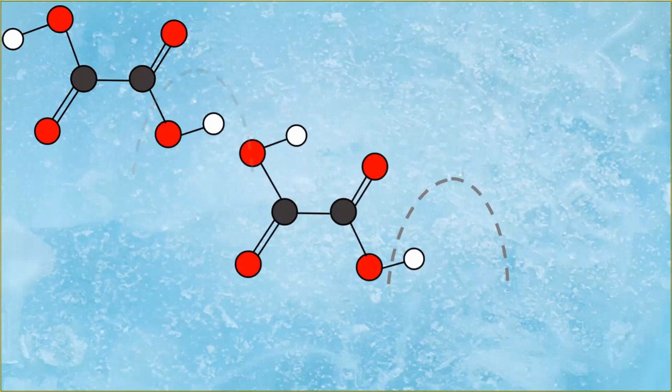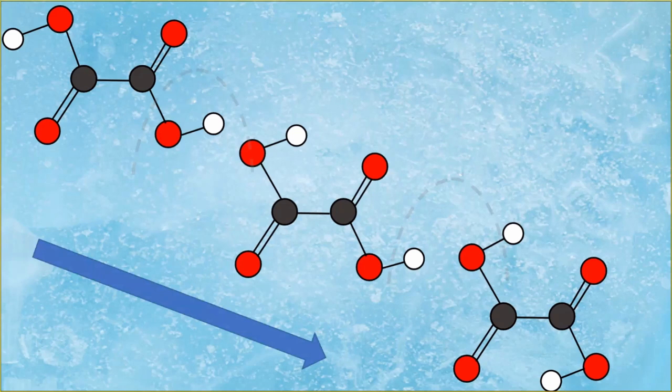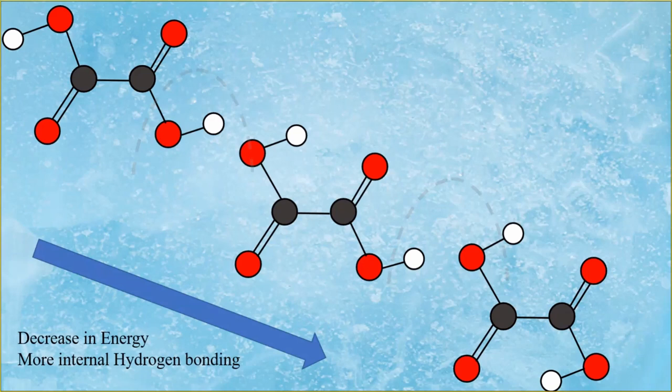The same is said for the next activation energy barrier, which is also penetrated through with quantum tunneling, and as a result, oxalic acid experiences another conformational change, which overall increases the internal hydrogen bonding in the compound. As a result, this compound experiences a decrease in energy and more internal hydrogen bonding. Overall, the decrease in energy is what helps increase its stability for the compound.